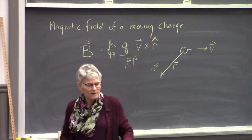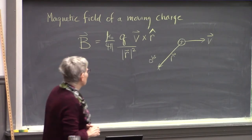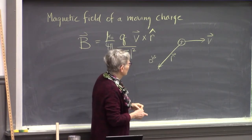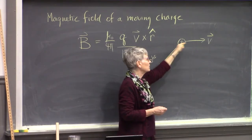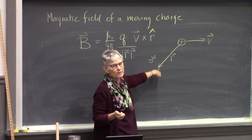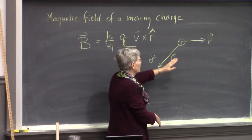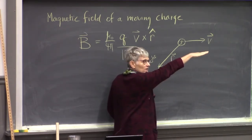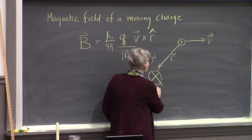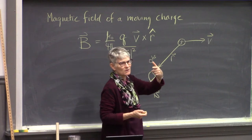We need to practice this because we need to be good at it. Notice that the direction of the magnetic field depends on this cross product. If I have a proton whose velocity is this way and an observation location here, I want the direction of the magnetic field made by this moving proton at that location. Using V × R̂: I point my fingers in the direction of V, curl them toward R, and my thumb sticks into the board. But I must be careful — Q could be positive or negative. Since it's a proton, the magnetic field will be in that direction. But if it were an electron, I'd multiply by a negative number, and the field would flip to coming out of the board.